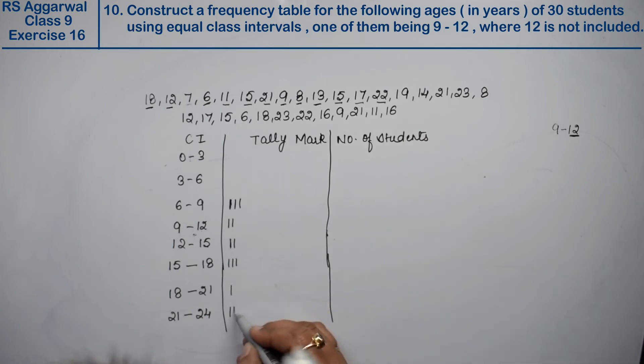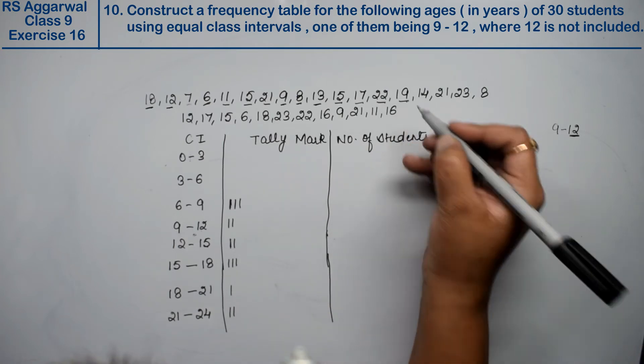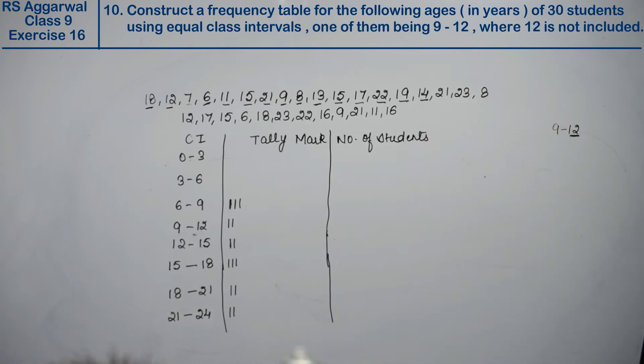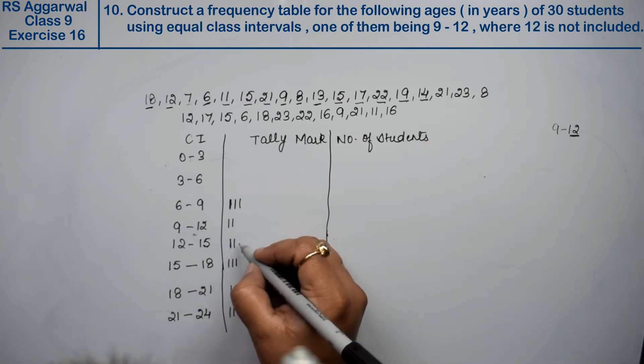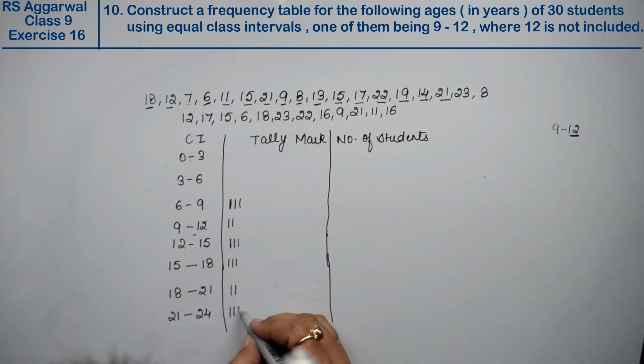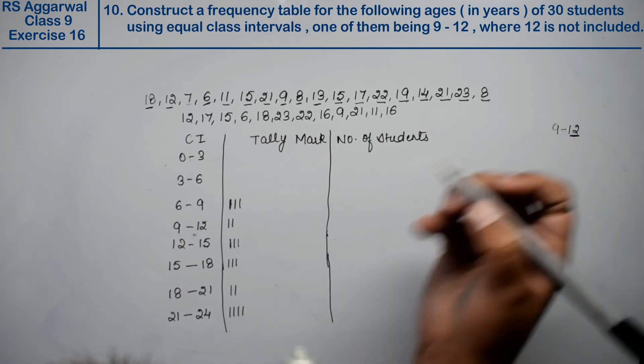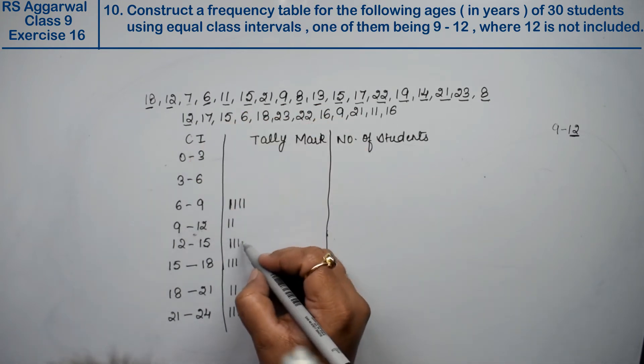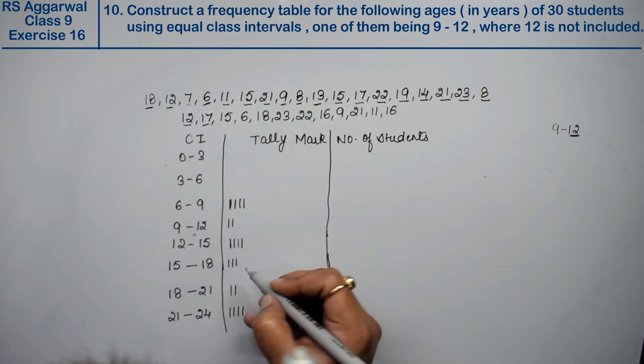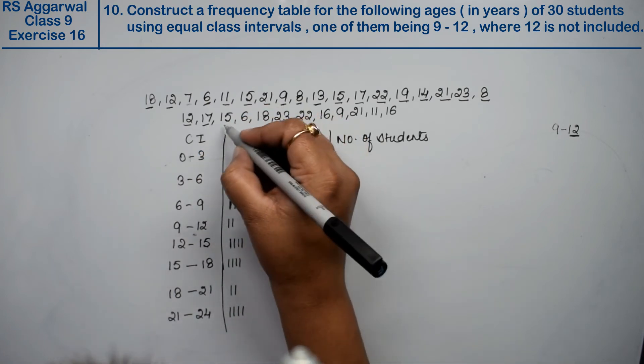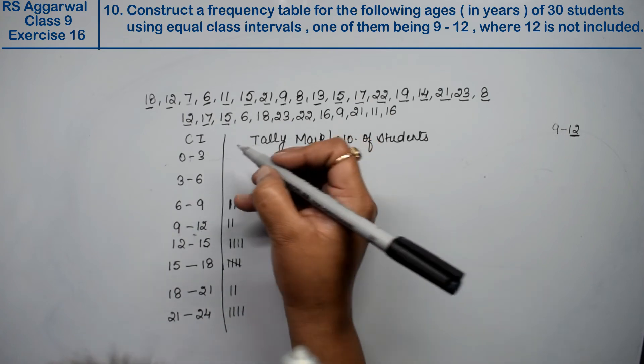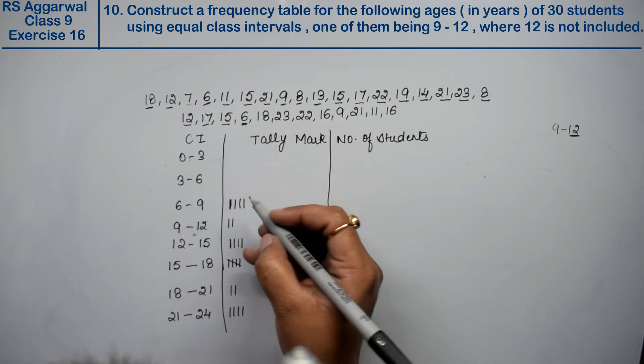20 goes in 18 to 21. 19 goes in 18 to 21. 14 goes in 12 to 15. 21 goes in 21 to 24. 23 goes in 21 to 24. 8 goes in 6 to 9. 12 goes in 12 to 15. 17 goes in 15 to 18. 15 goes in 15 to 18. 6 goes in 6 to 9.